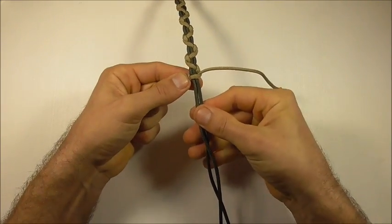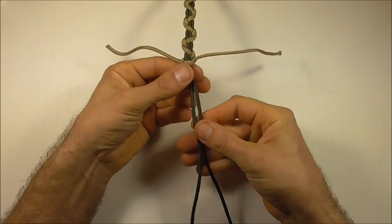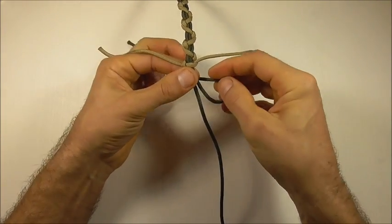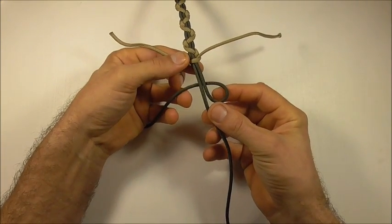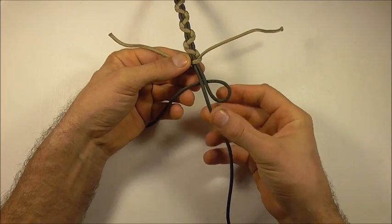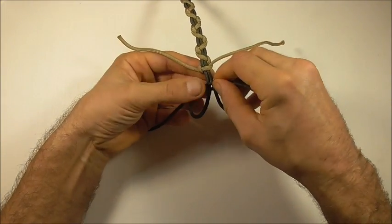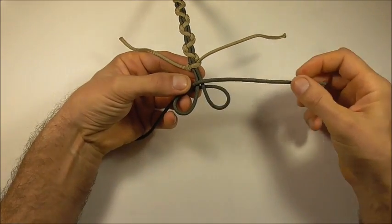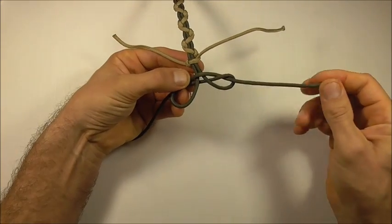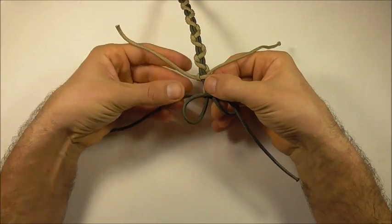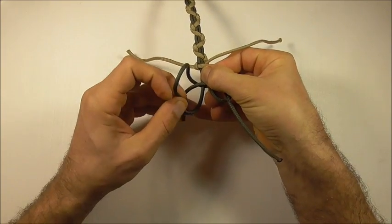And then we can use our two center strands here to tie a button. And the way I'm going to do that is to take that right strand underneath the two center strands to form a loop and the left strand over the top. I'm going to take this right strand up through that right loop and the left strand down through that left loop.